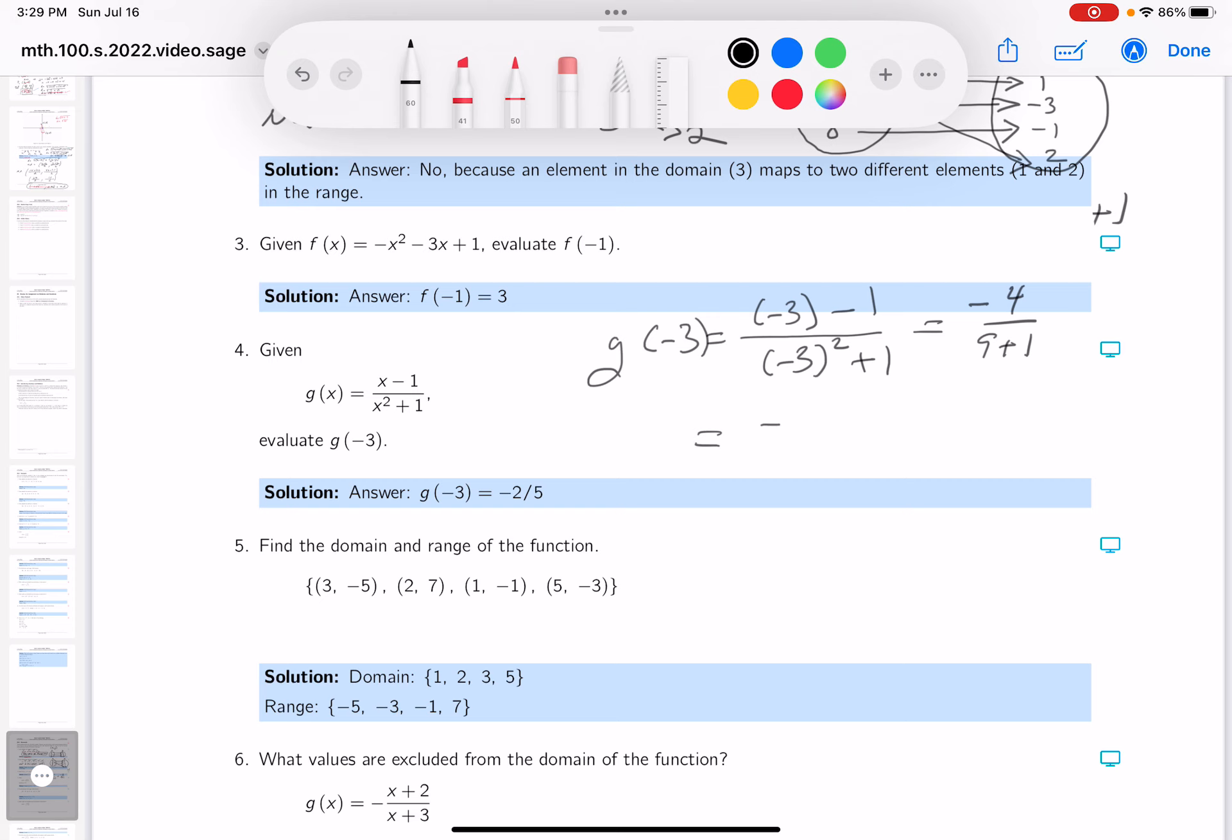I'm going to simplify that. Minus 4 tenths should be written as minus 2 fifths. I'll put a box in that. I want to look at the grading key and see if that's what they're listing as an answer. And they're listing minus 2 fifths. We're good to go on to the next question.